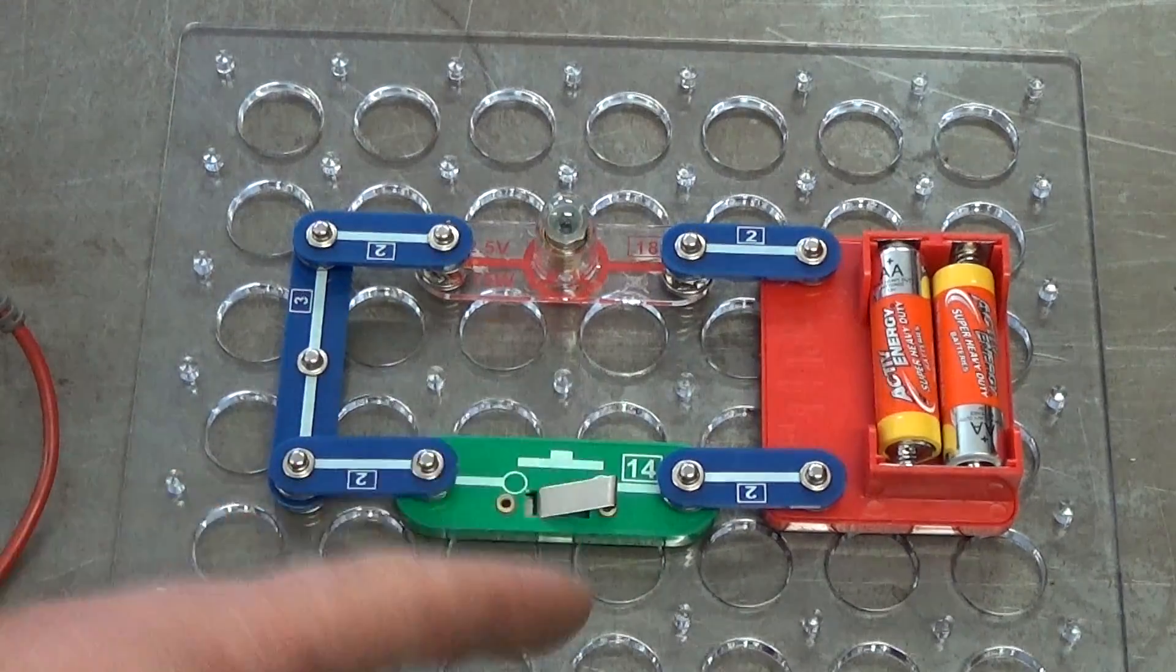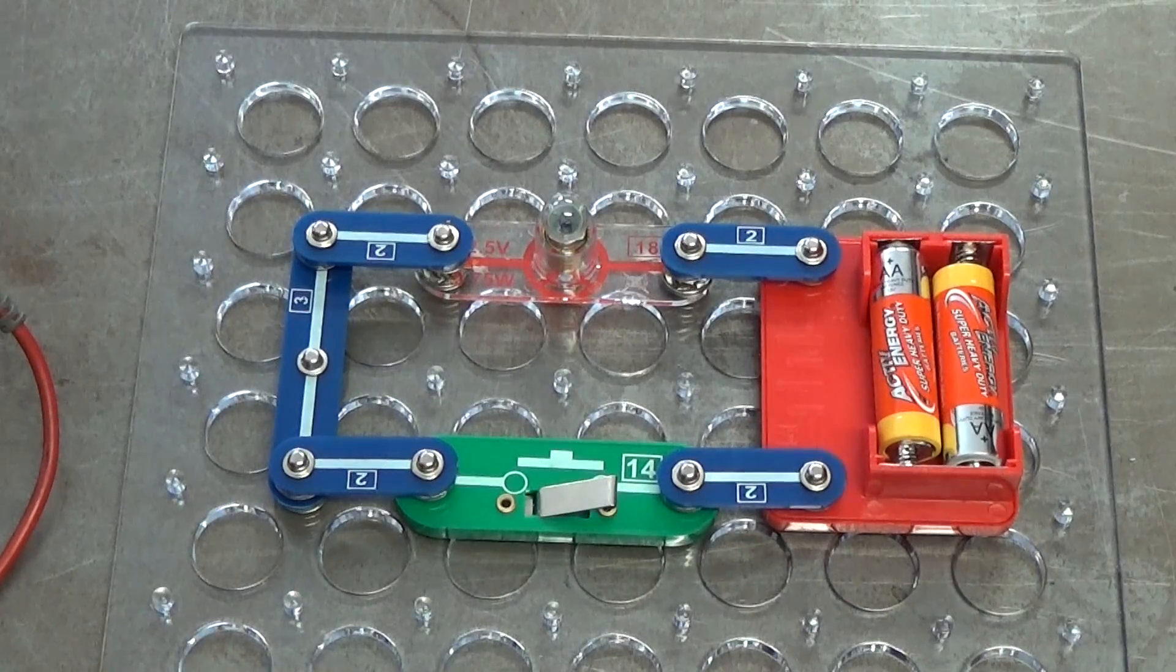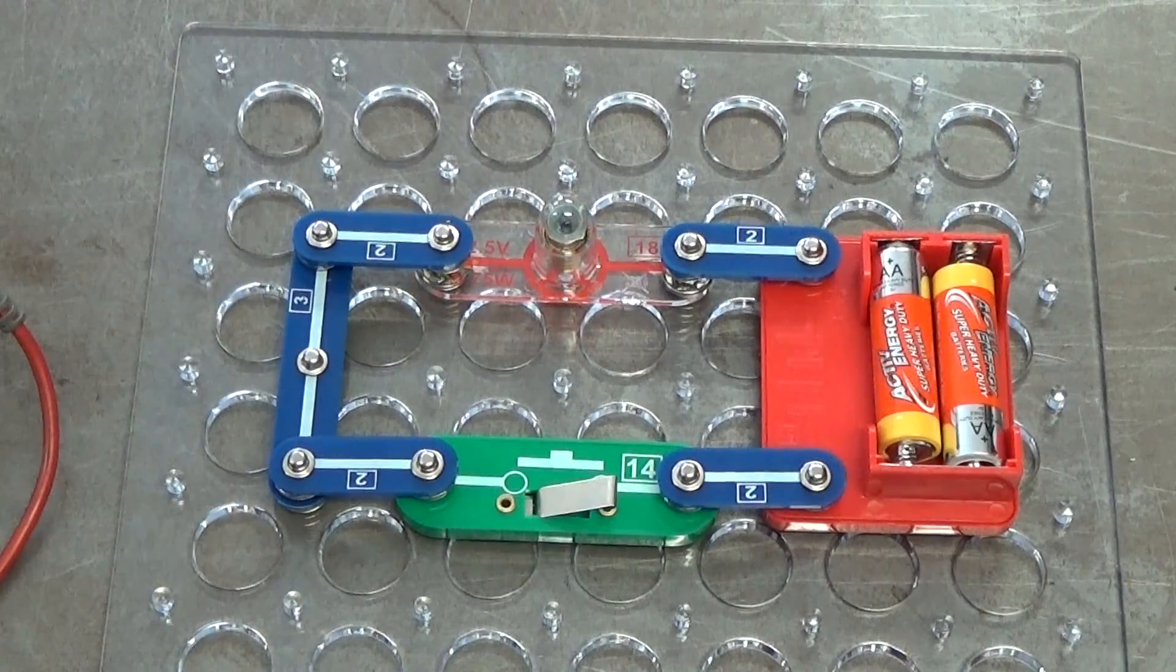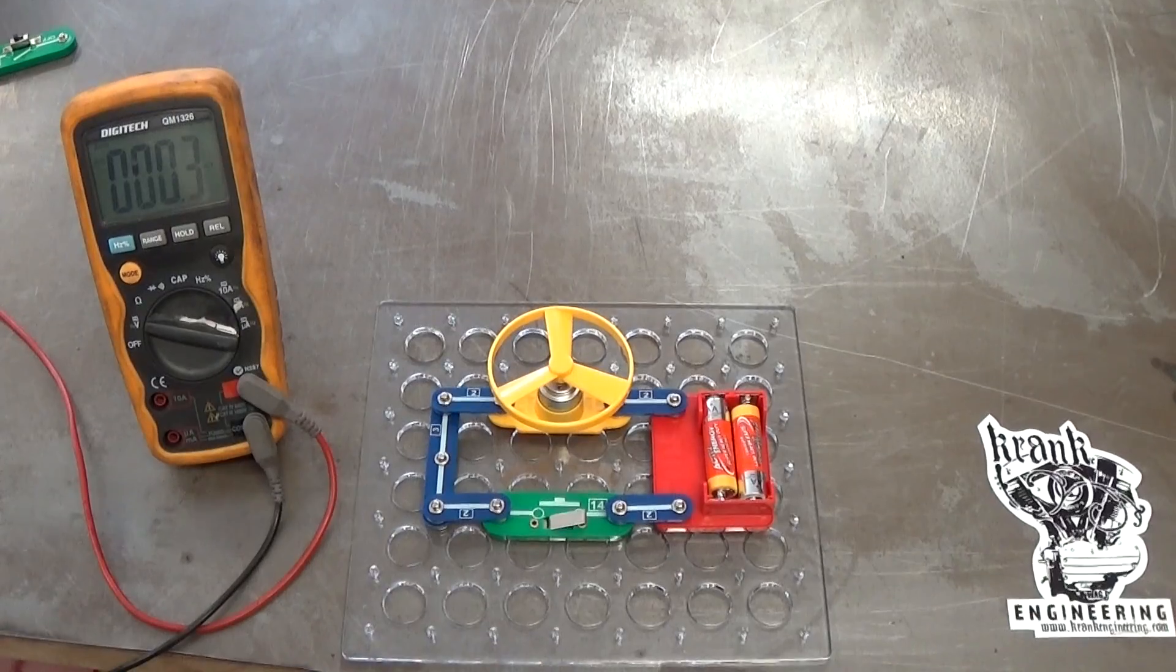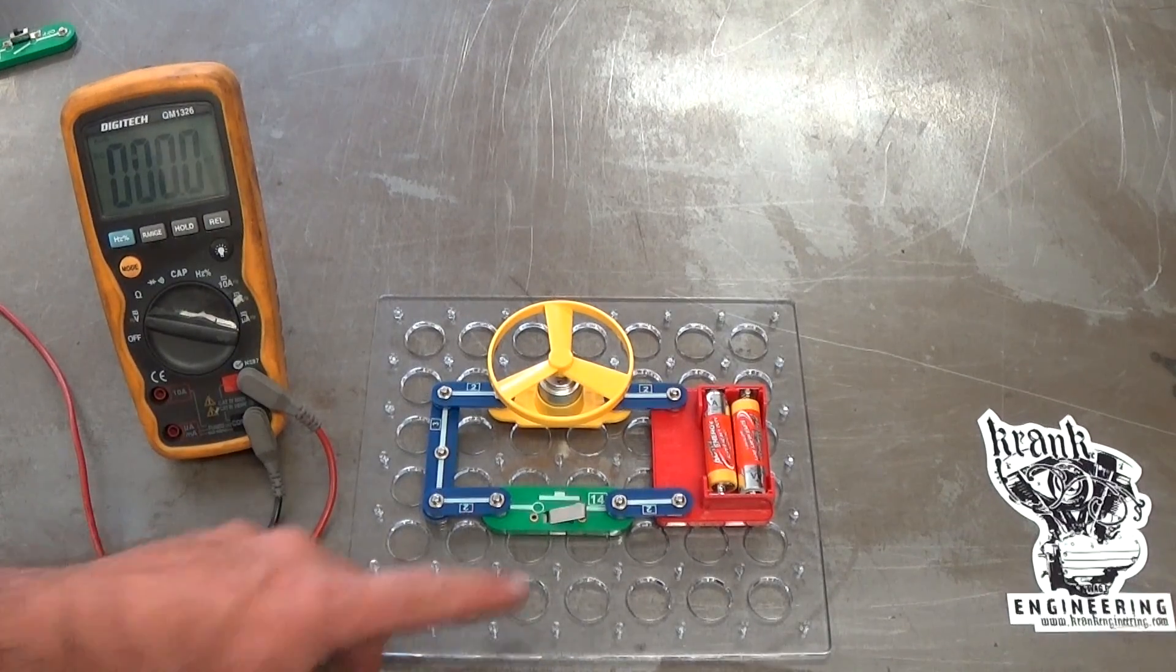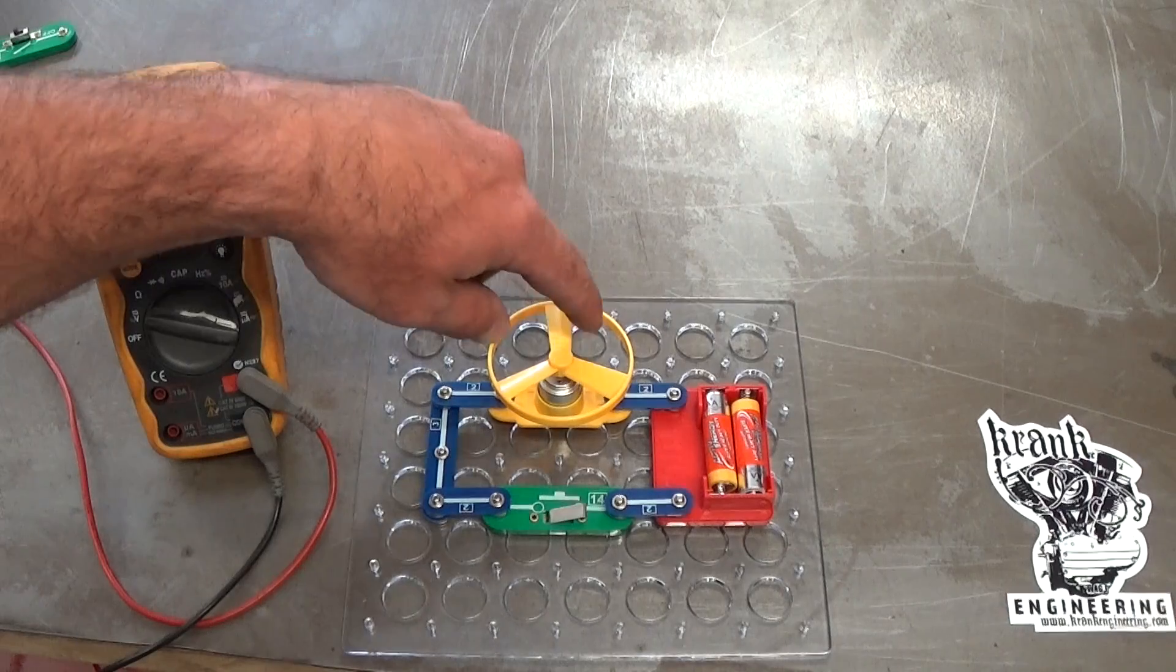So again, used on some circuits in the bike. Let's have a look at the next one. Okay, I've made another change to the circuit. Now this time I've taken the globe out and I put in a little motor.